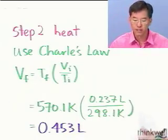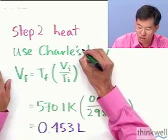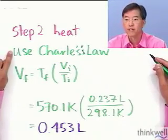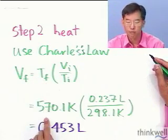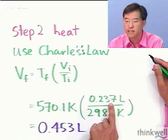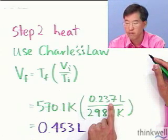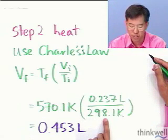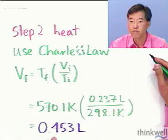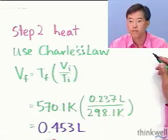In the next step, we're going to heat using Charles's Law. With the final temperature of 570.1 Kelvin, the intermediate final volume of 0.237 liters, and the initial temperature, we work this out and get exactly the same 0.453 liters. So we've shown that combining Charles's Law and Boyle's Law into the combined gas law is useful when varying more than one parameter, and that doing it stepwise gives exactly the same answer — there's nothing mysterious about it.